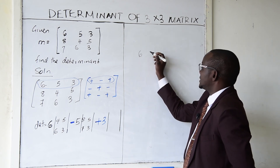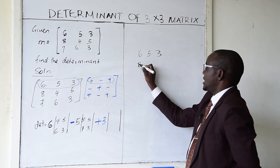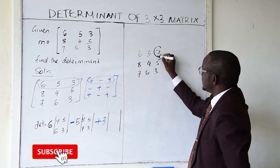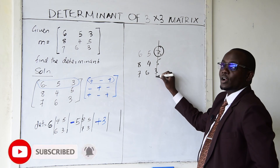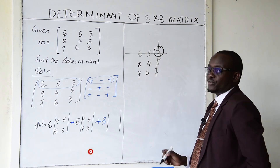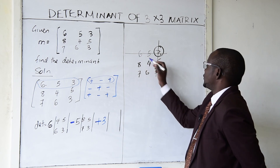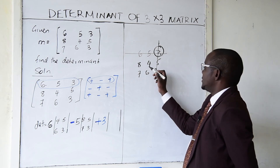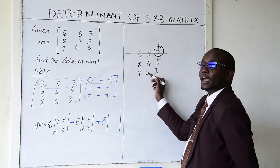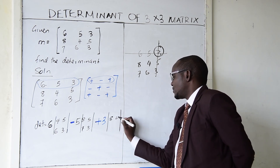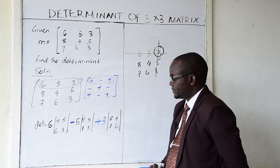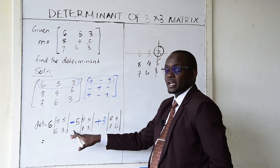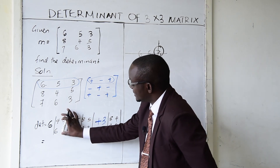To get the submatrix for element 3, I take the full matrix 6, 5, 3 / 8, 4, 5 / 7, 6, 3 and cancel the row and column containing 3. I remain with the 2 by 2 matrix: 8, 4 / 7, 6.